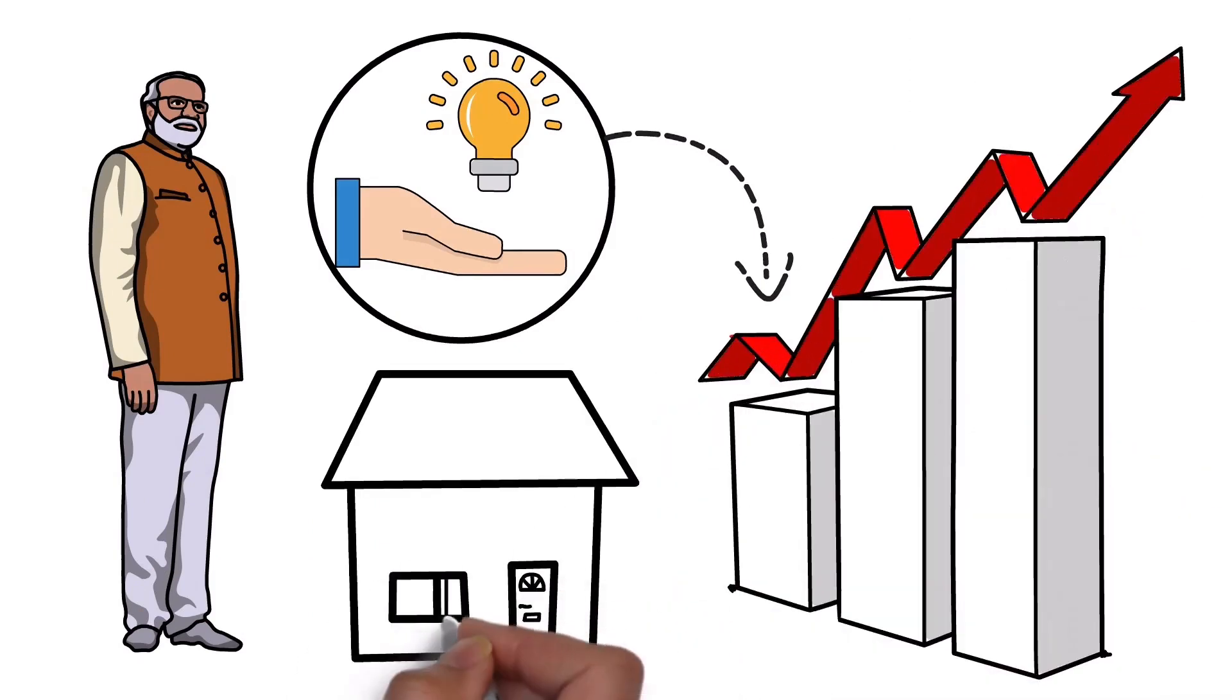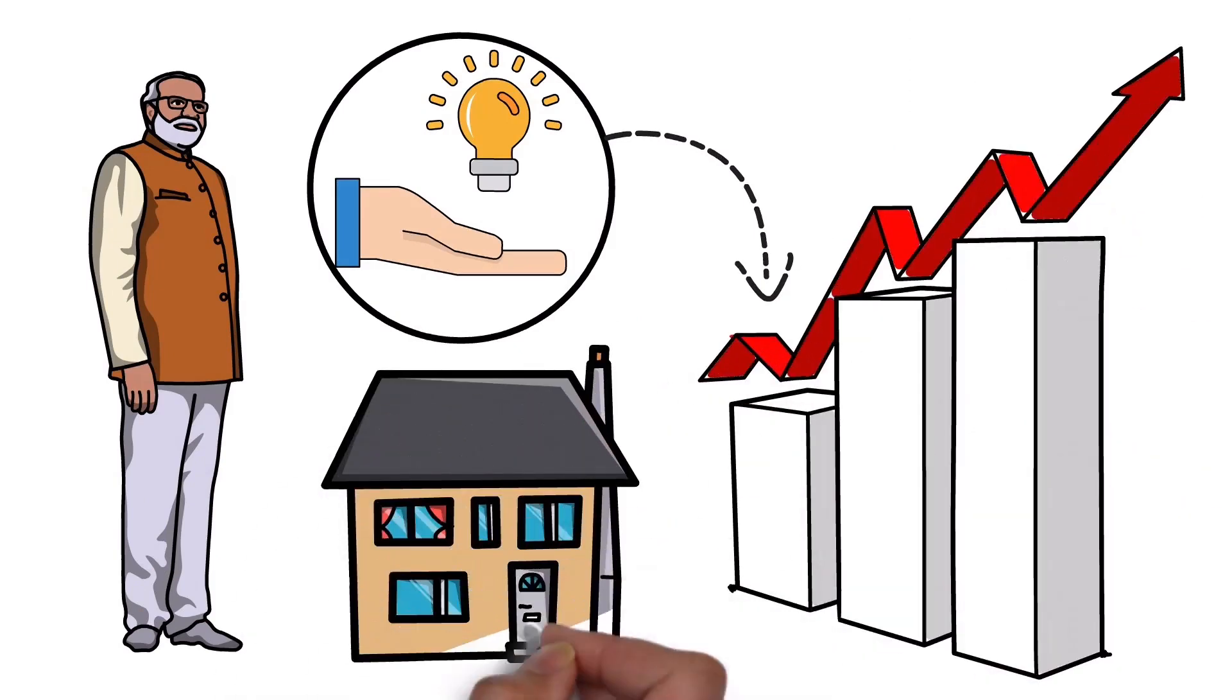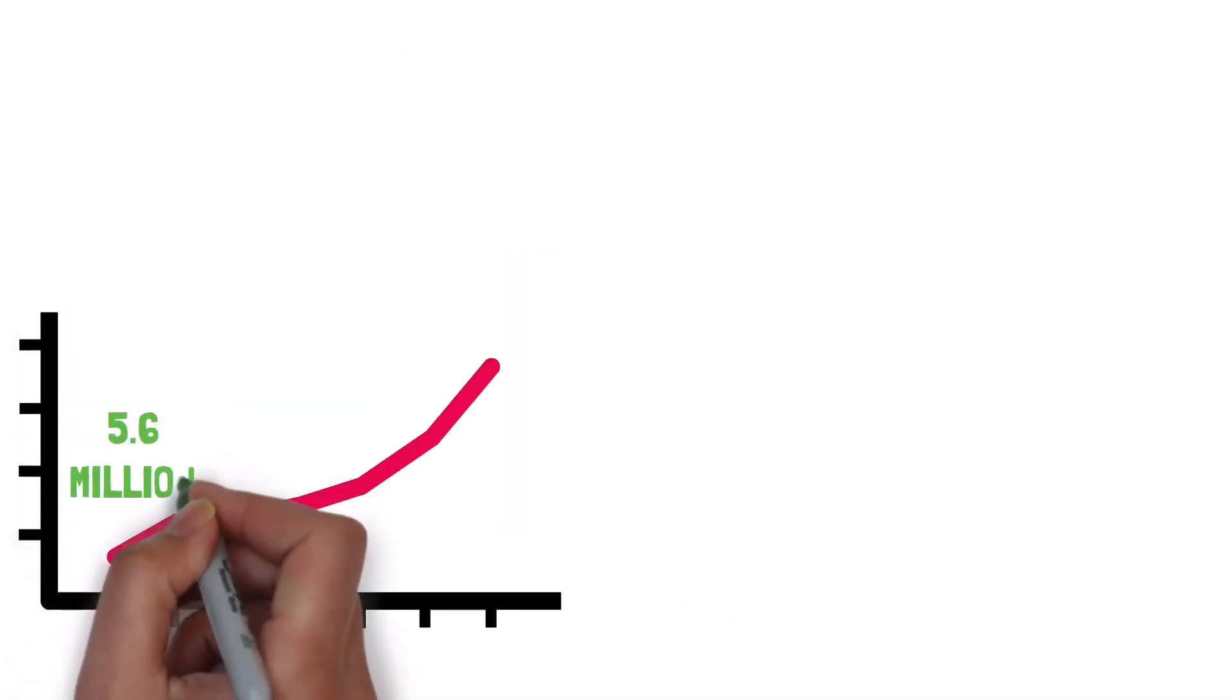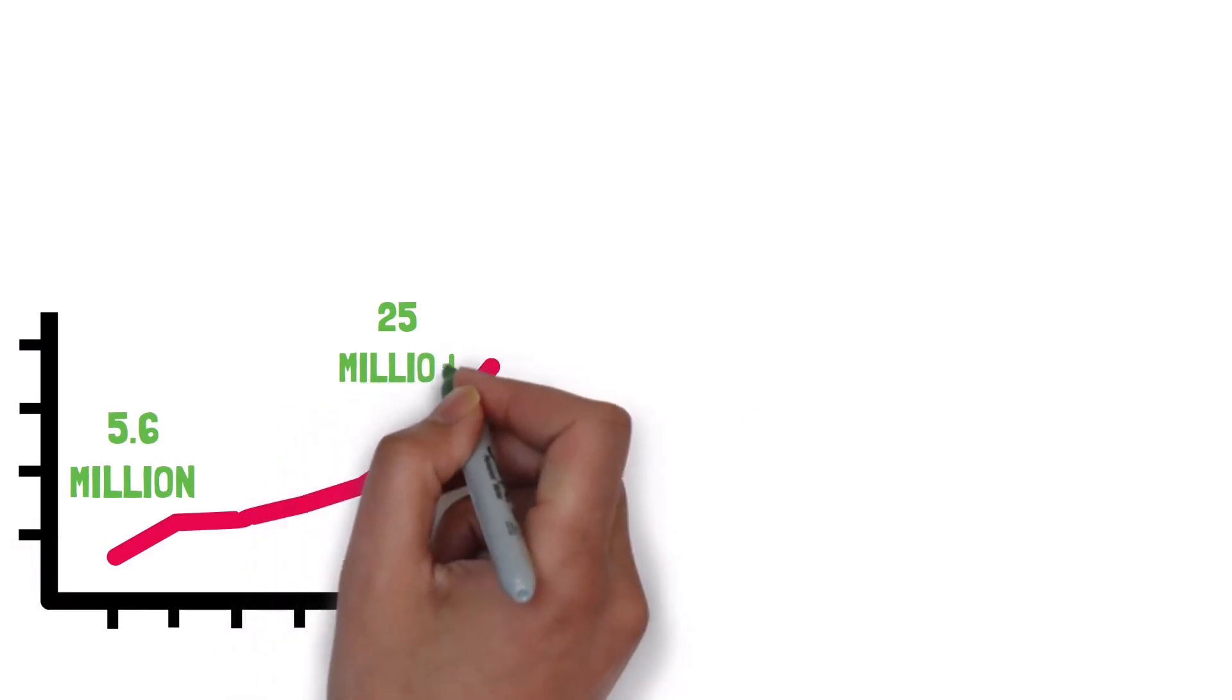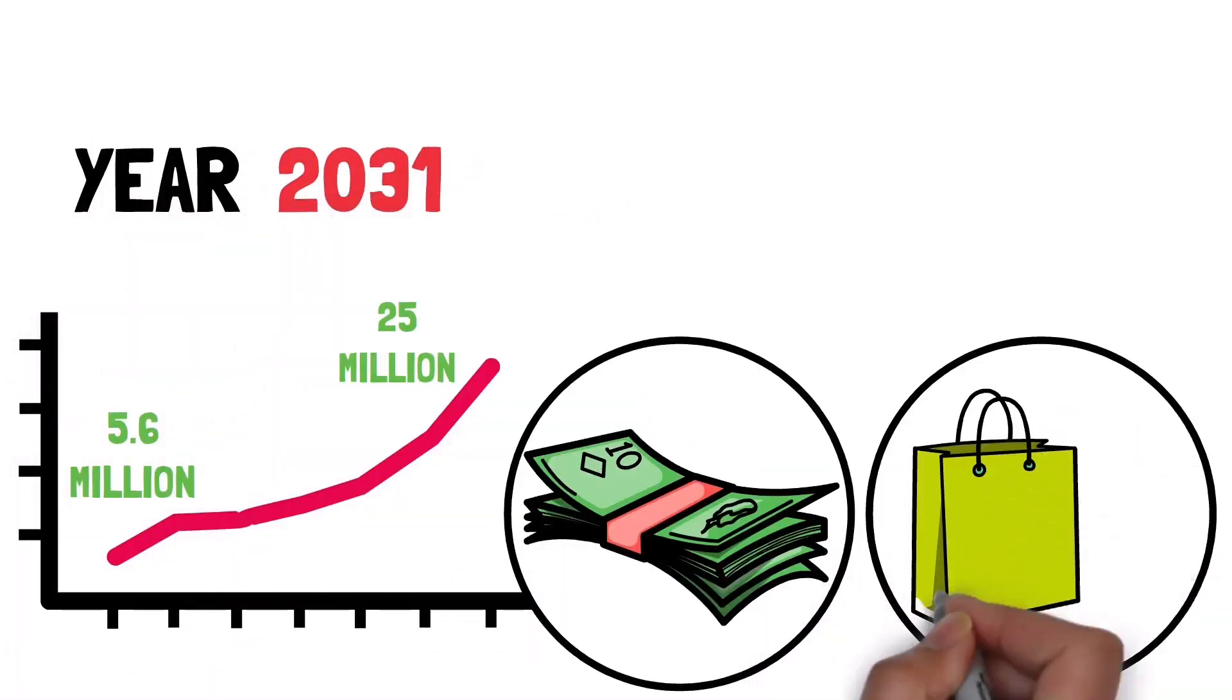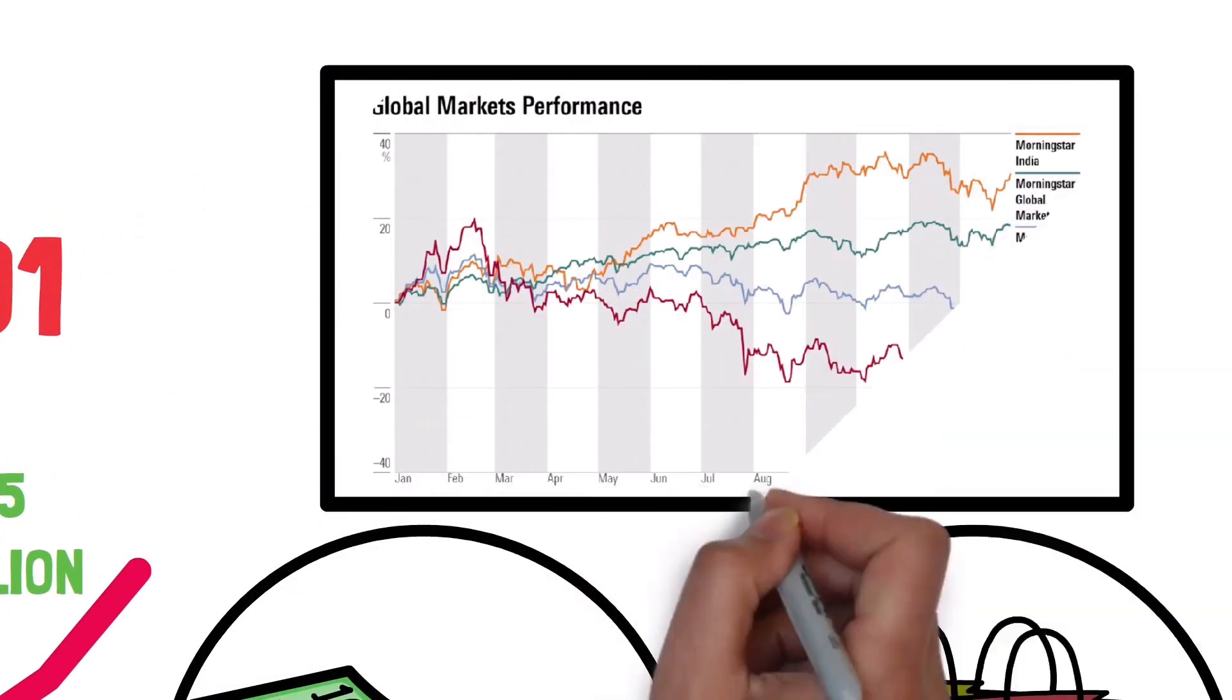And speaking of financial growth, the number of households making $35,000 a year will go up from 5.6 million households to over 25 billion households by the year 2031. And more income means more spending, which means, in theory, India's stock market should go up.